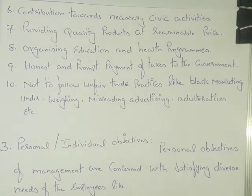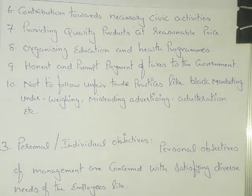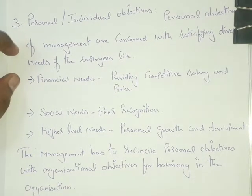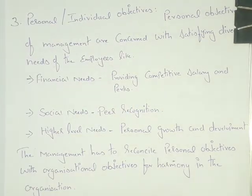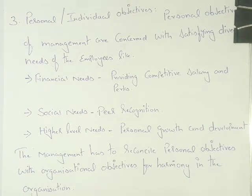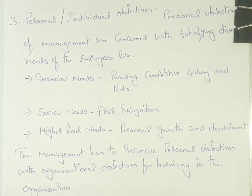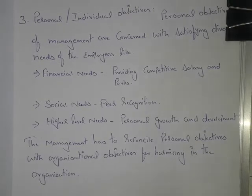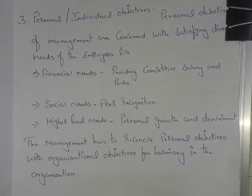The last segment is personal or individual objectives. Personal or individual objectives of management are concerned with satisfying the diverse needs of the employees. It is purely related to individuals — employees. This includes financial needs, social needs, and higher-level needs. Under financial needs, it is about providing competitive salary and perks — the best in the industry salary to employees so that they get satisfied financially.